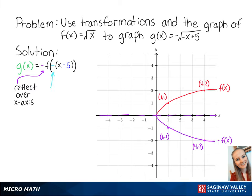The negative x means that we will reflect the new graph over the y-axis. So our new points are at (negative 1, negative 1) and (negative 4, negative 2). Connecting these points, we get the graph of negative f of negative x.